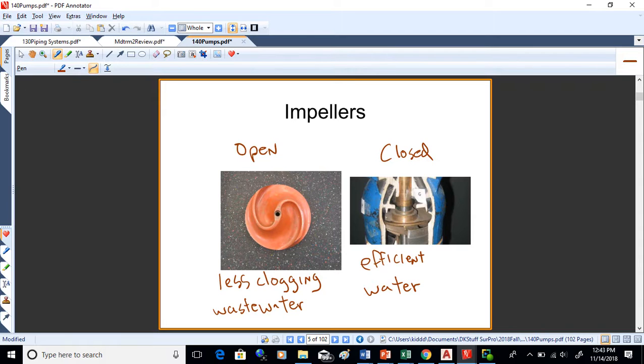Closed impellers might be around 80-90 percent efficient, or 80 percent or higher. Open impellers may be down around 50 percent. You really pay the price on an open impeller, but you need to have them on a wastewater pump.